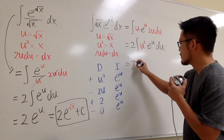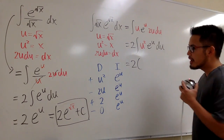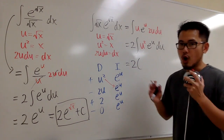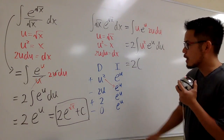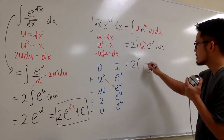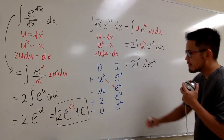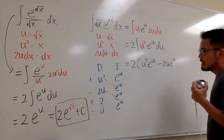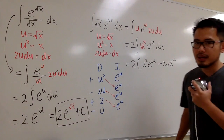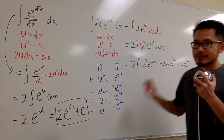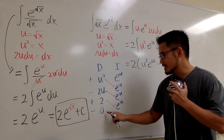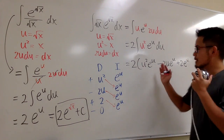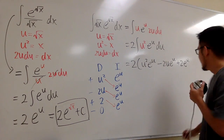Now we read the answer from the diagonals, putting the 2 in front with parentheses. The first diagonal is positive u squared times e to the u. The second diagonal is negative 2u times e to the u, giving minus 2u e to the u. The third diagonal is positive 2 times e to the u, giving plus 2e to the u. We stop because the next term would be 0 times e to the u, which is just 0. All diagonals are accounted for — there are no more integrations to do.